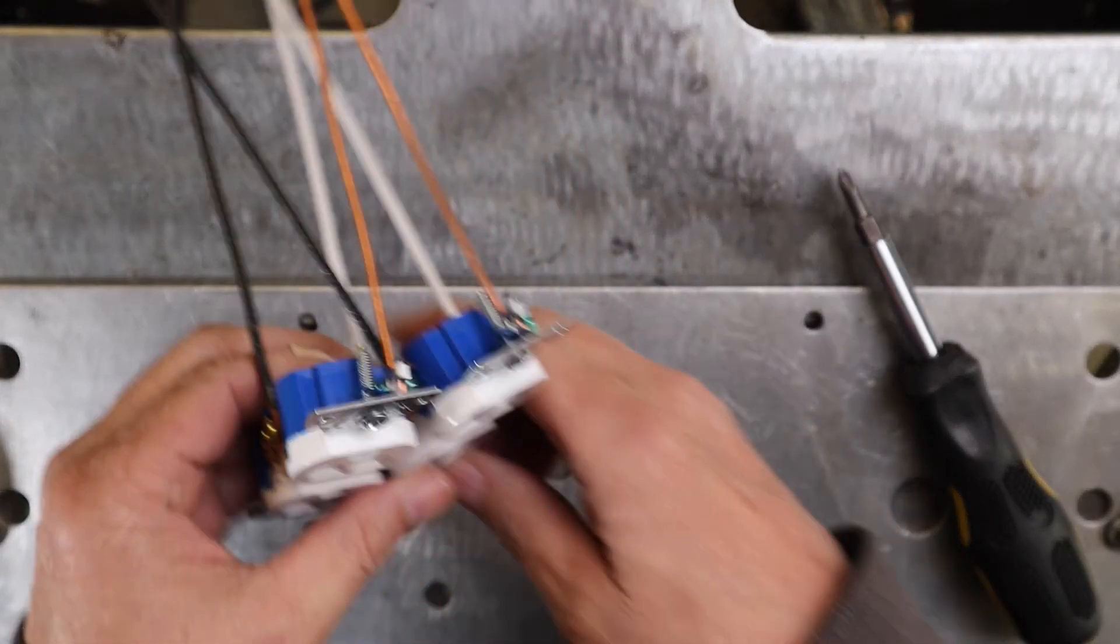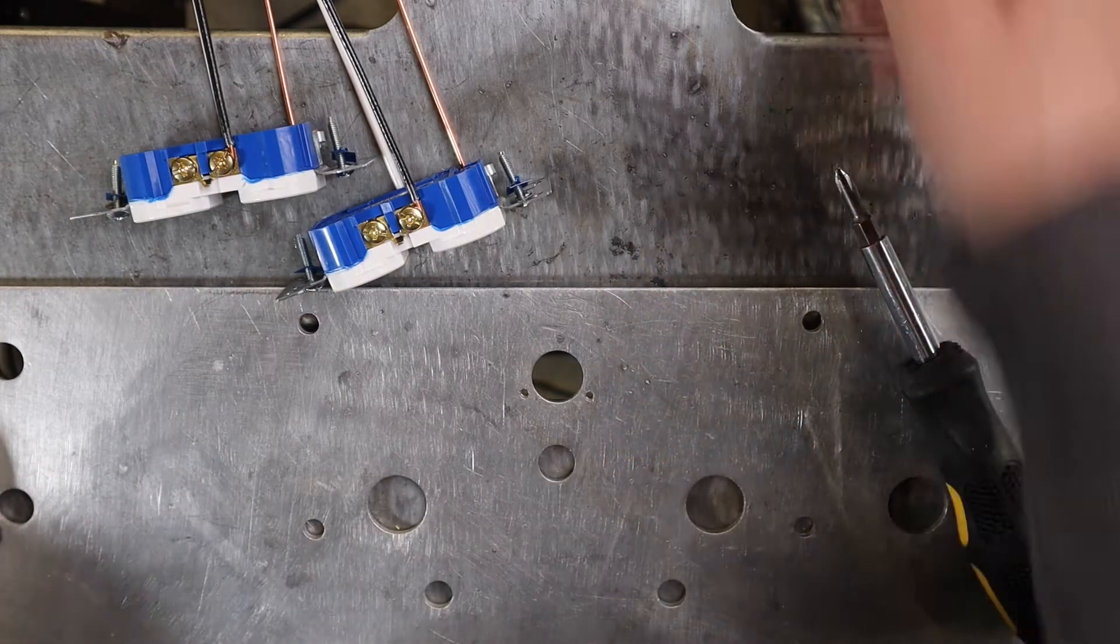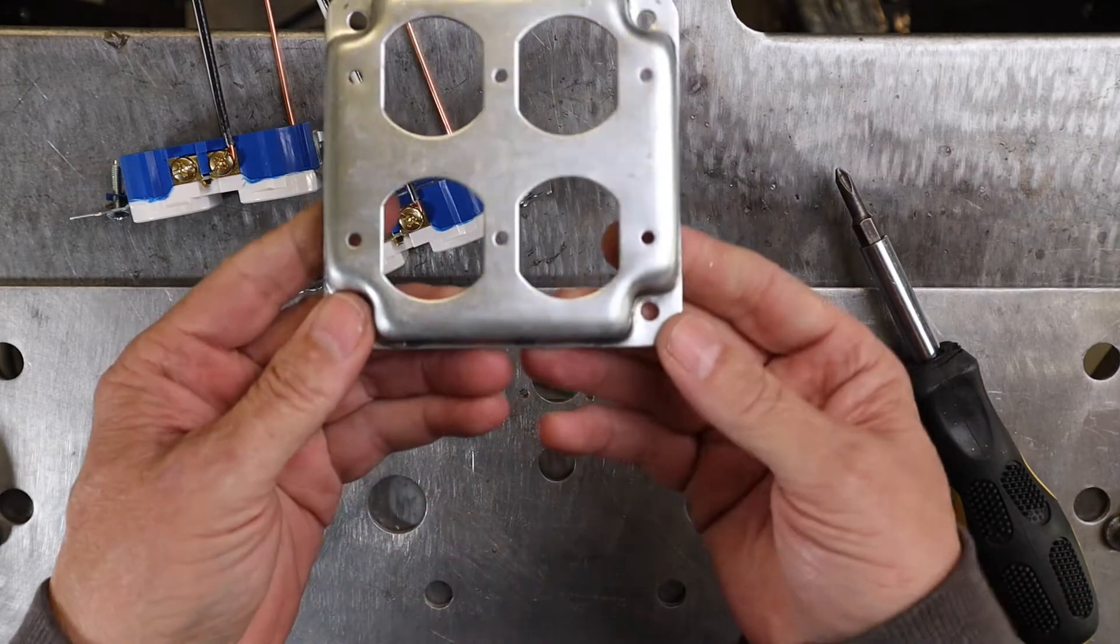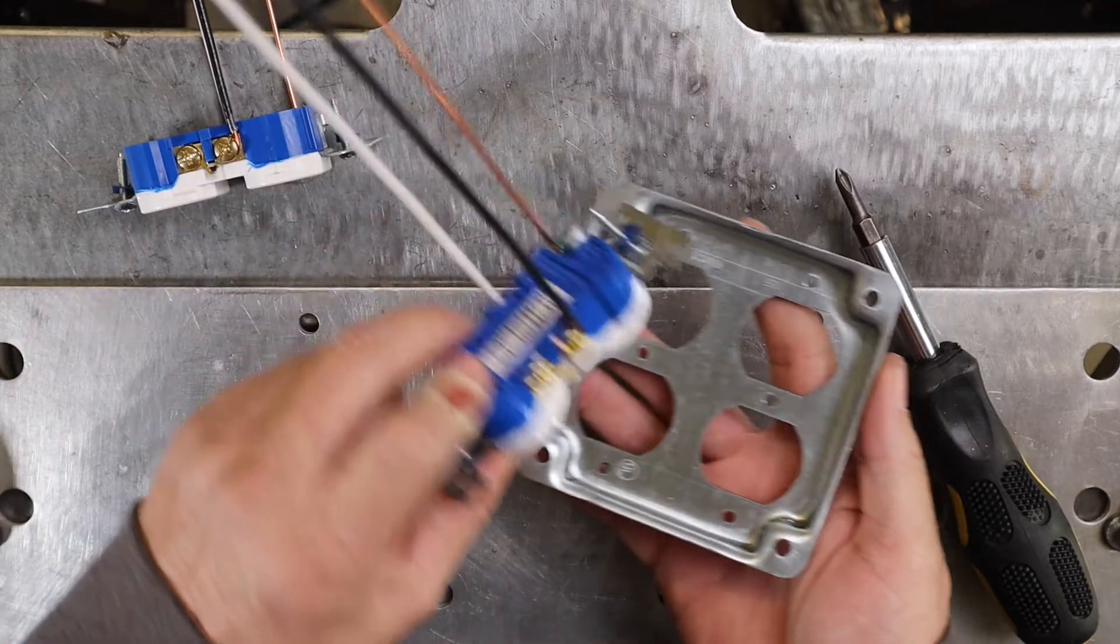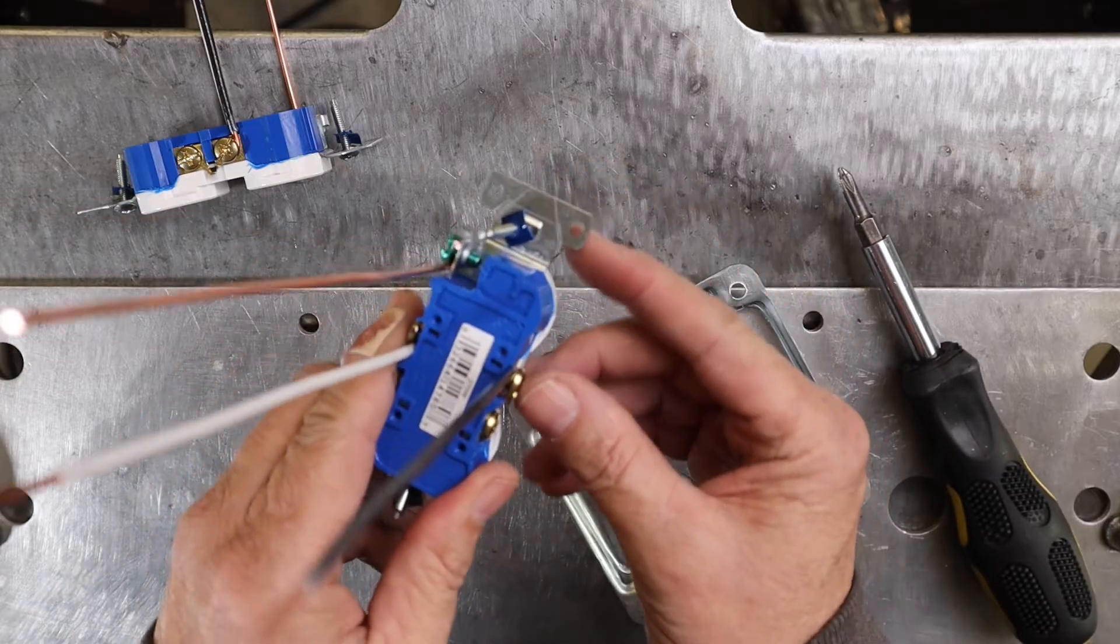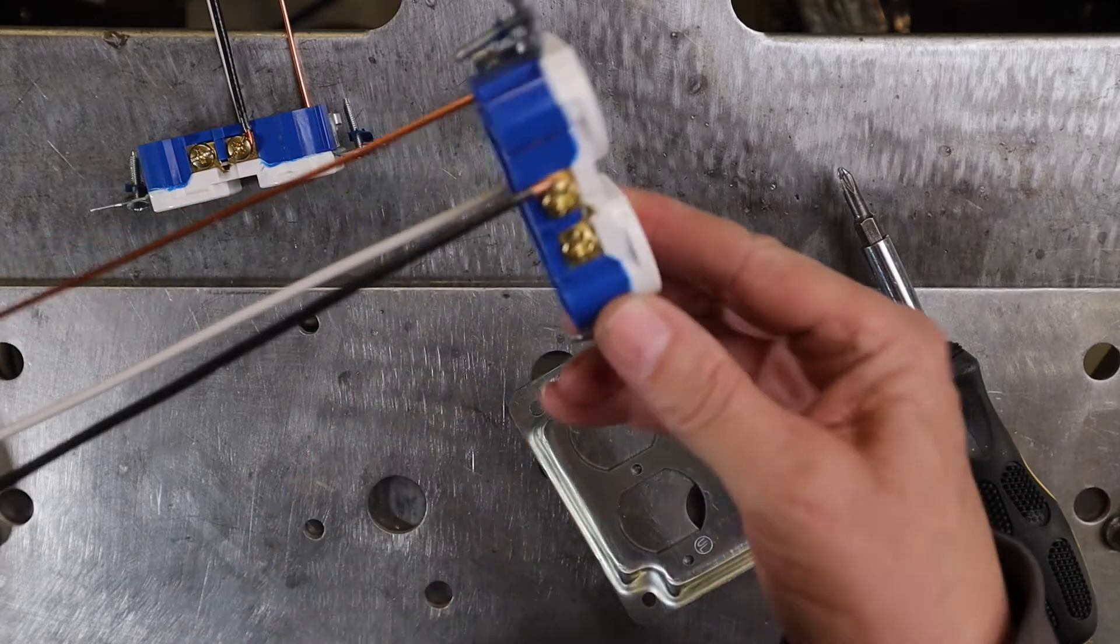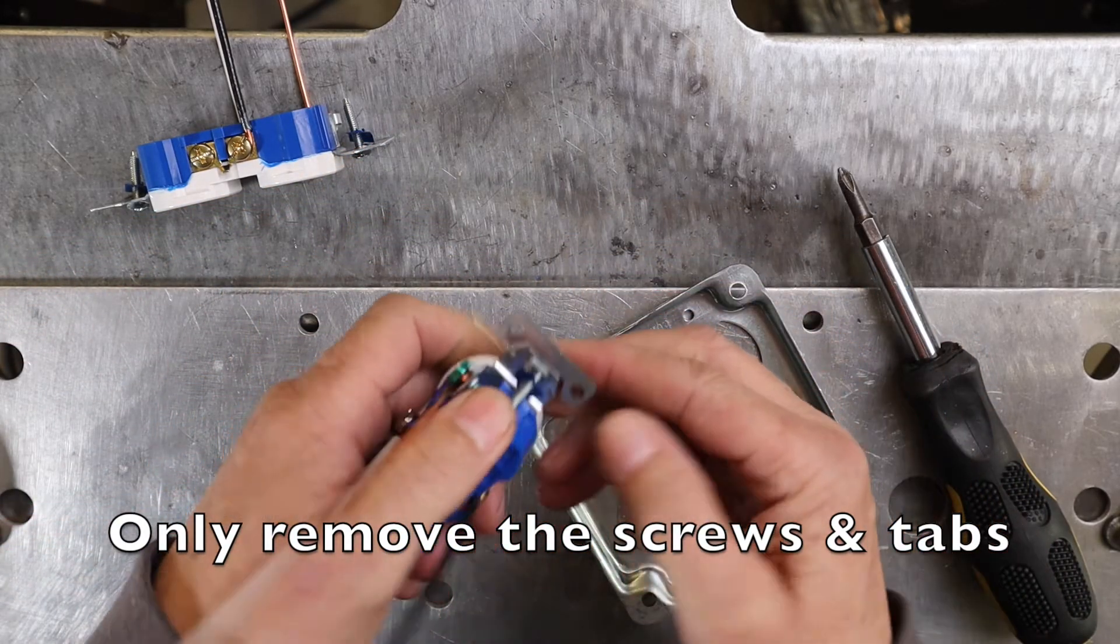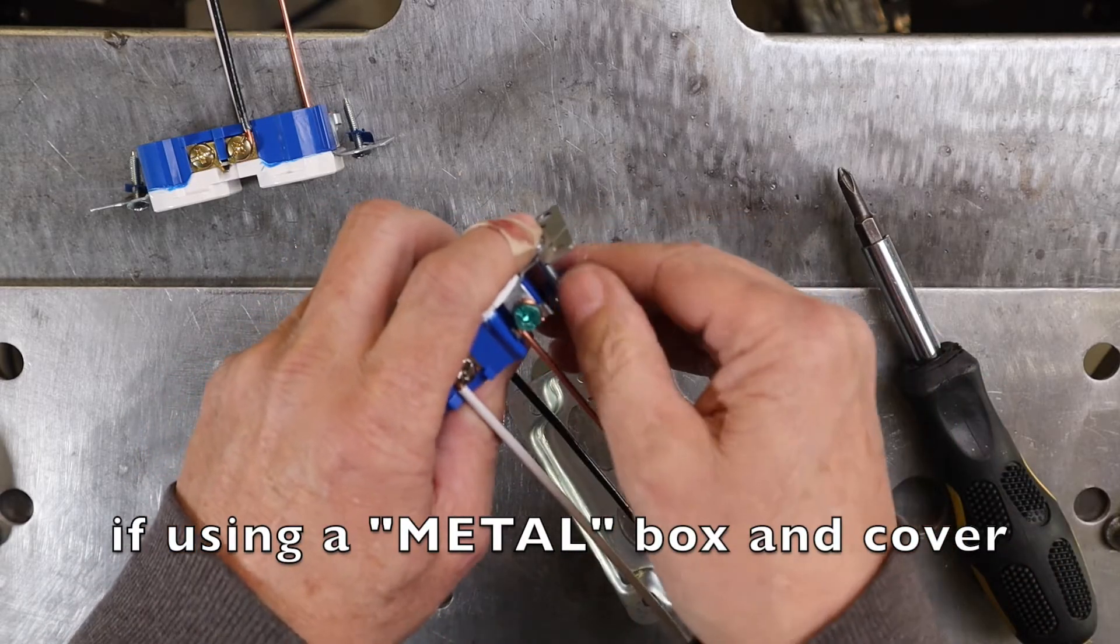The next step, if you're connecting two duplex outlets like I am in a metal box and you have a cover plate like the one I got, the outlets will not fit into this cover plate with these tabs or these ears on here. And yours might be slightly different, but the principle is the same with all of them. First of all, you want to take the screws out.